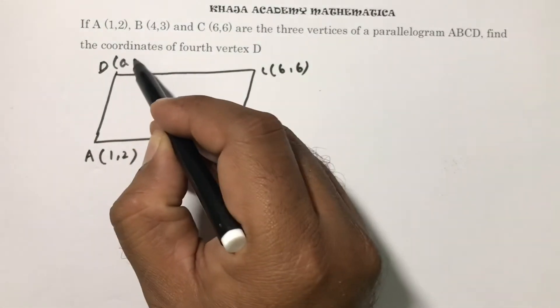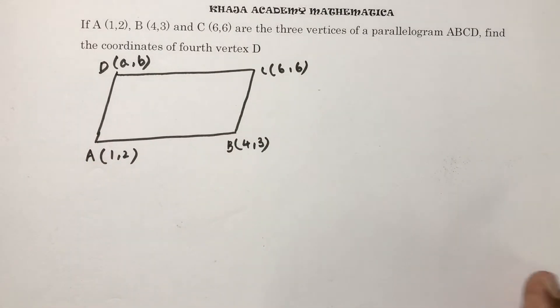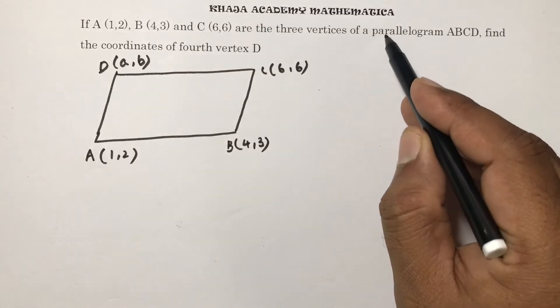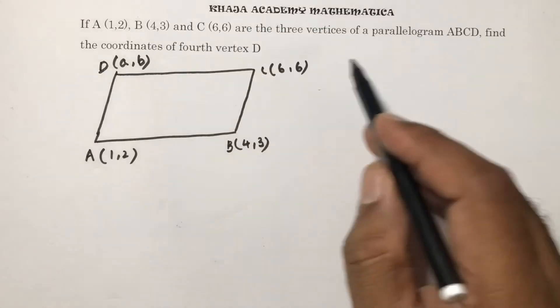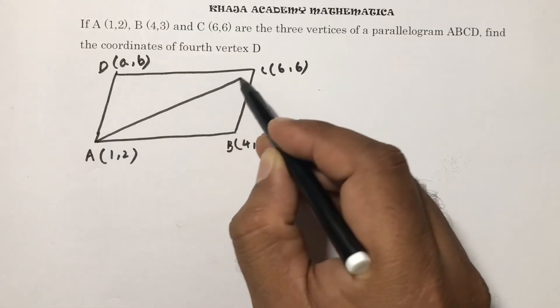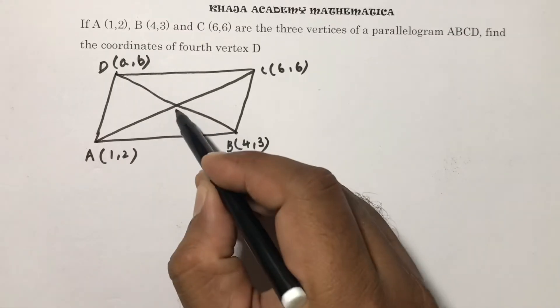So D you can take it as A, B. So I need to find A, B which is the fourth vertex. As it is a parallelogram, they may give parallelogram, rectangle, rhombus, or square because in all these diagonals bisect each other.